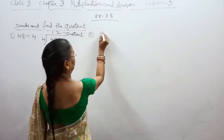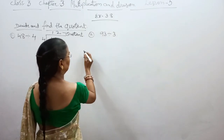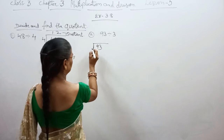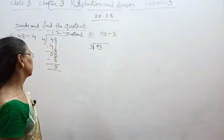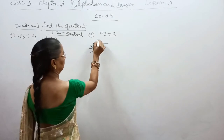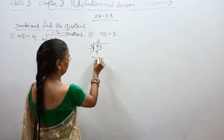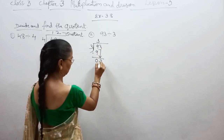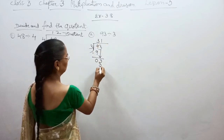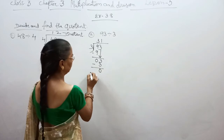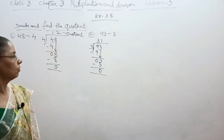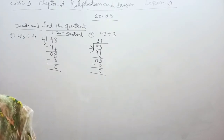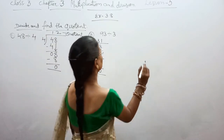The second question is 93 divided by 3. We take 9, then 3 into 9 gives 3, minus it we get 0. Then we carry down 3. Again 3 into 3 gives 1, minus it we get 0. Like this we have to divide the numbers given in the questions.